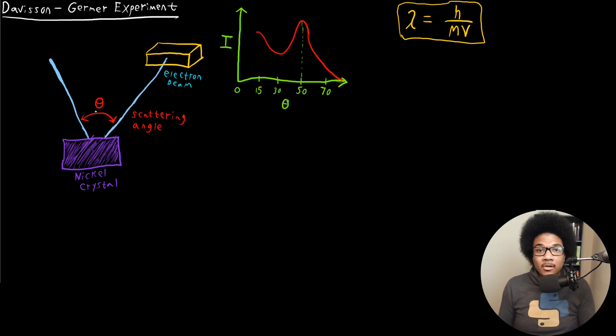And what Davison and Germer realized is that the scattering of the electrons was producing a wave-like diffraction pattern. And so they noted that there was a peak intensity around a scattering angle of about 50 degrees from the face of the nickel surface.